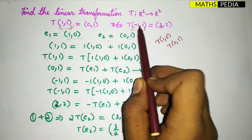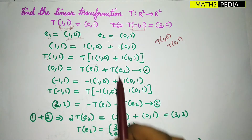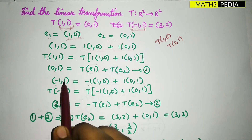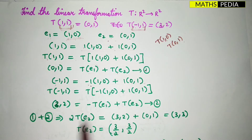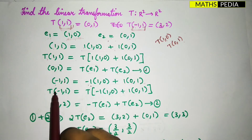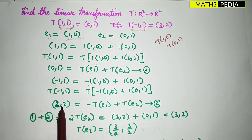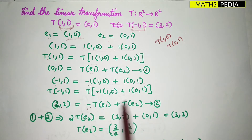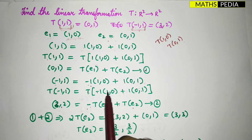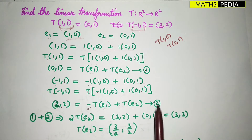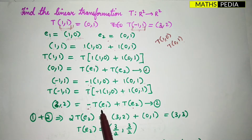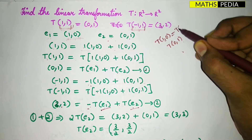Next we take (-1,1) and express it as a linear combination: (-1)·(1,0) + 1·(0,1). Multiplying both sides with T, T of (-1,1) is given as (3,2), and the right side becomes -T(e1) + T(e2). This is the second equation. We need to solve these two equations to find T(e1) and T(e2), which are T(1,0) and T(0,1).